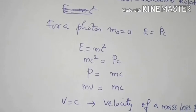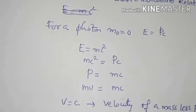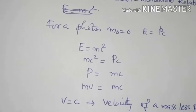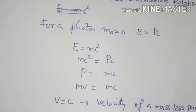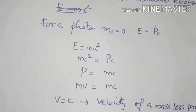For a massless particle, the velocity equals the velocity of light, v equals c. So the rest mass is zero, and the velocity of a massless particle equals the speed of light. The momentum of such a particle follows accordingly from the relativistic energy-momentum relation.